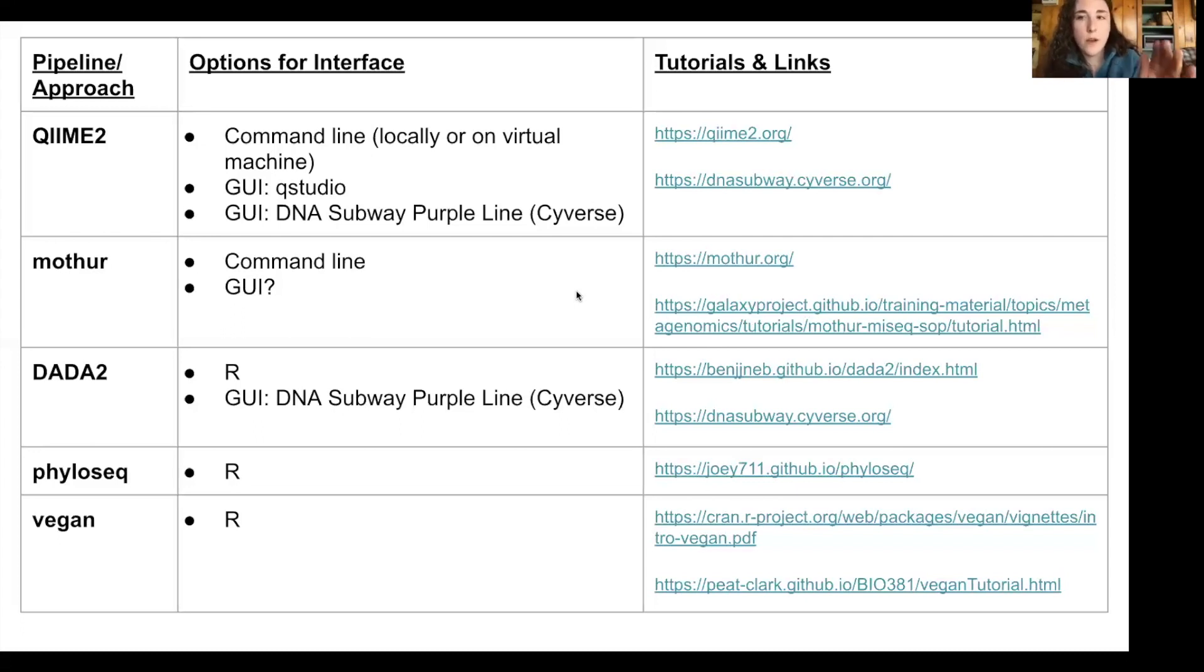So DADA2 on its own can be implemented in R, but aspects of DADA2 can also be implemented through this same GUI as the one for QIIME 2, the DNA Subway Purple Line. And then the two packages that I mentioned for analyzing count table and taxonomy data, phyloseq and vegan, those are usually implemented in R.